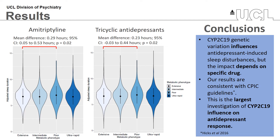Of course, our study has some limitations. Firstly, the dose and treatment duration were unknown, but we plan to address this by using some of the recently released primary care data for a subset of our sample. Secondly, the sample size for some drugs was too small for individual analysis. And finally, the results presented here are based only on participants of white European ancestry. We're already in the process of conducting an updated analysis using eligible participants of all ancestry backgrounds in UK Biobank.